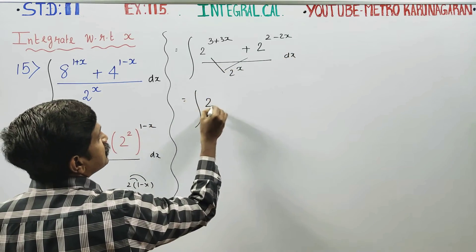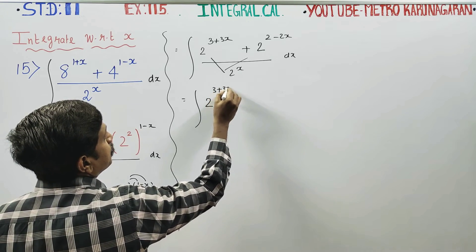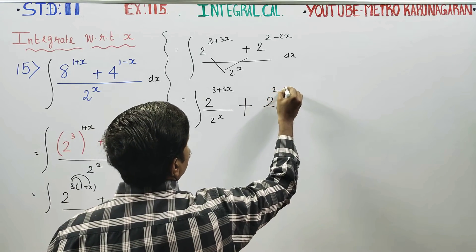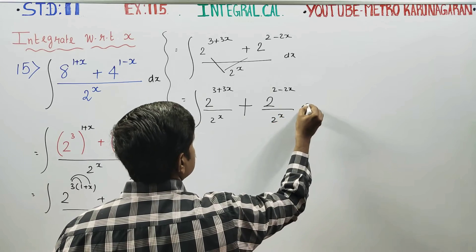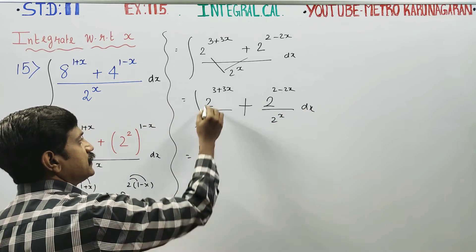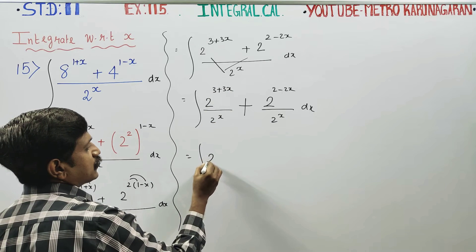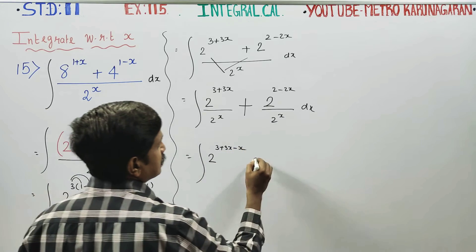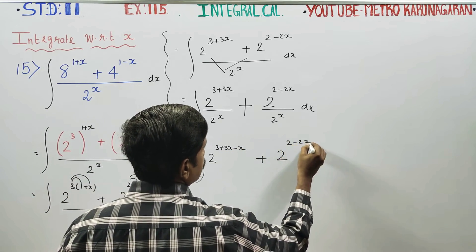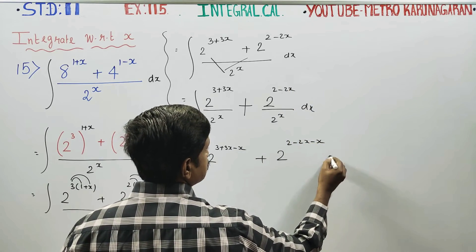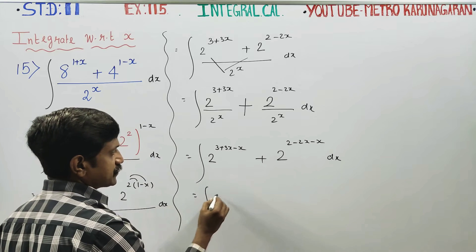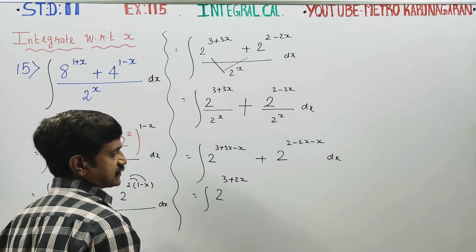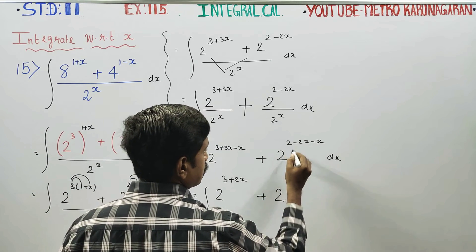You can separate this: integration of 2 power (3 plus 3x) by 2 power x, plus 2 power (2 minus 2x) by 2 power x, dx. When bases are the same, powers will subtract. This becomes integration of 2 power (3 plus 2x) plus 2 power (2 minus 3x), dx.